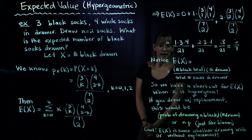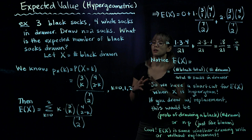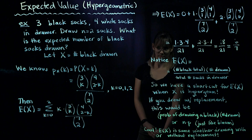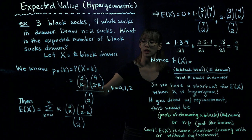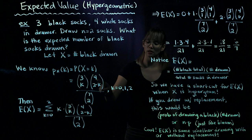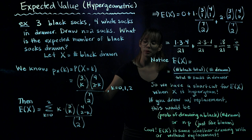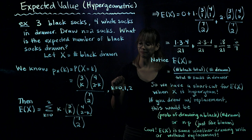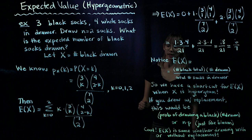Let X be the number of black socks drawn from those two draws. It's useful to start off by writing the PMF. The probability X equals K: we have three black socks and four white socks, so it's three choose K times four choose two minus K, divided by seven choose two in the denominator — the total number of ways we could choose two socks out of seven.